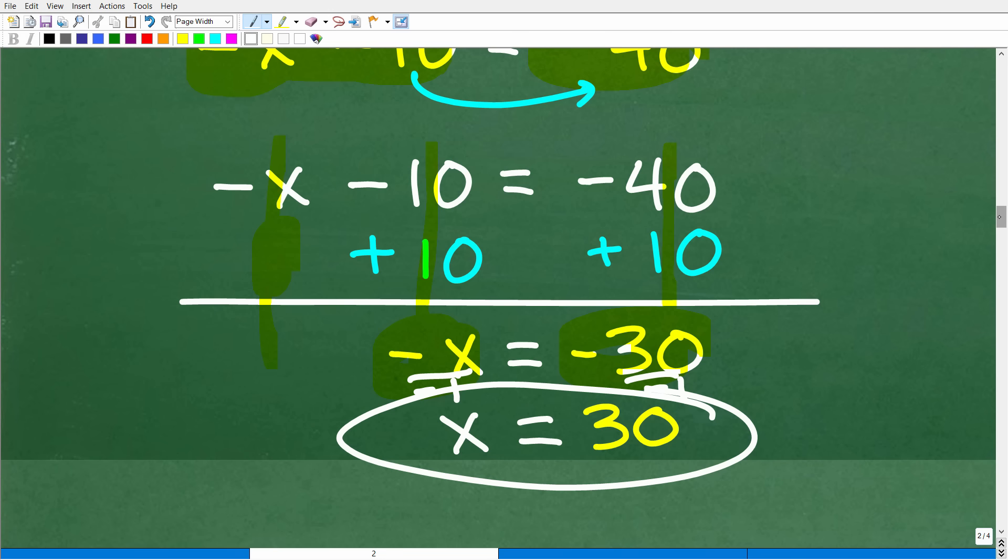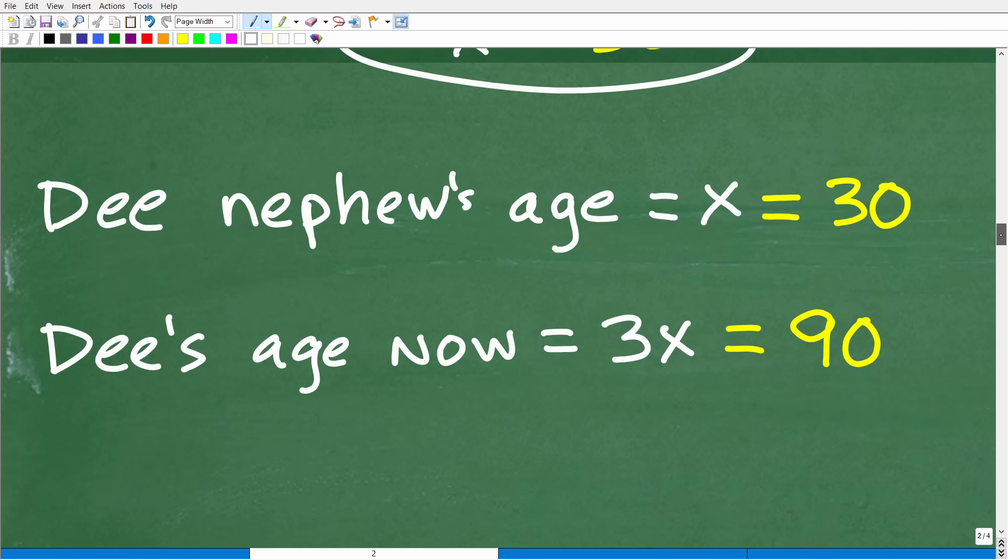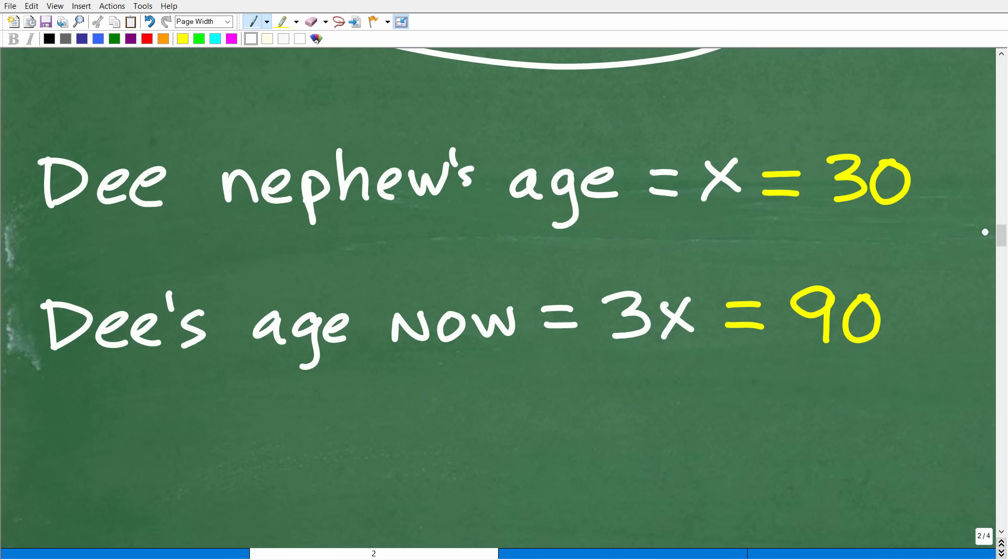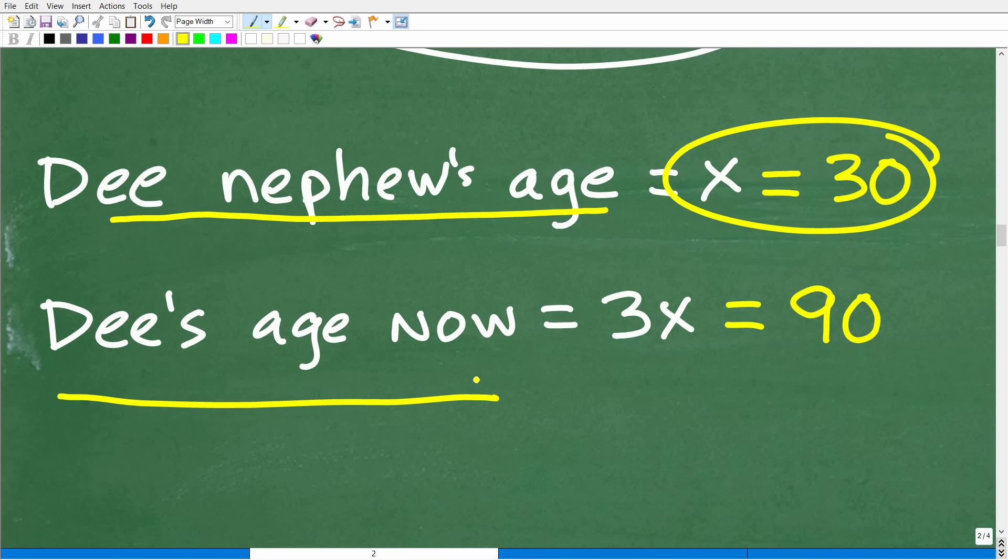Okay, now what do we do with this answer? Well, we're not done, right? So we need to go back and review. Remember, in the beginning of this problem, we said that we're going to let x equal Dee's nephew's age, his current age right now. So Dee's nephew's current age is 30, and Dee's age is 3x, right? Remember, she is three times as old as her nephew, so that would be 3 times 30, which, of course, is 90 years old.